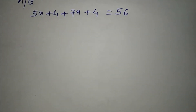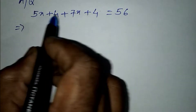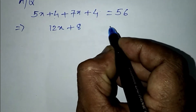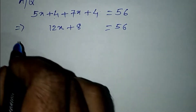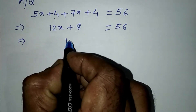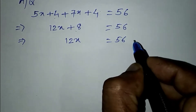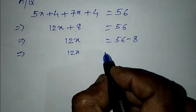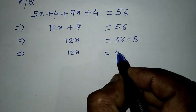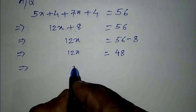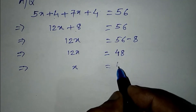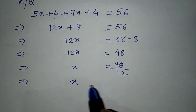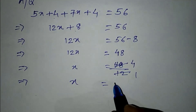Solving the equation: 5 plus 7 is 12, so 12x plus 8 equals 56. This implies 12x equals 56 minus 8, which equals 48. Therefore x equals 48 divided by 12, so x equals 4.